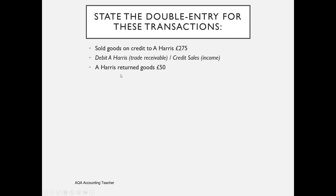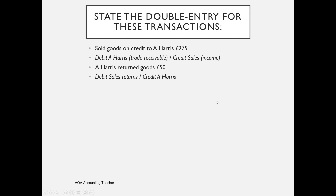A Harris has then returned goods to us, so we reverse the original entry. When we made the sale we debited A Harris; now we credit the A Harris account to reduce the amount owed to us, and debit a sales returns account. Don't debit sales — never be tempted to debit sales. The double entry is to debit sales returns and credit the customer's account, in this case A Harris.